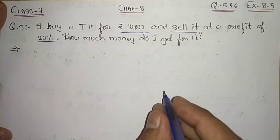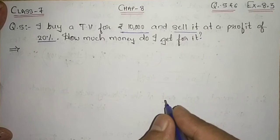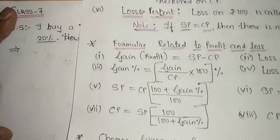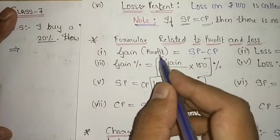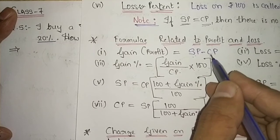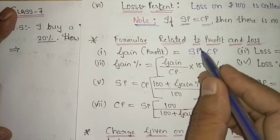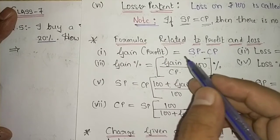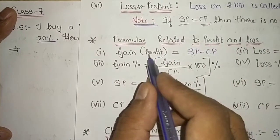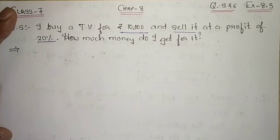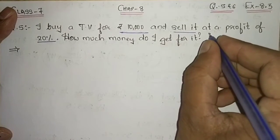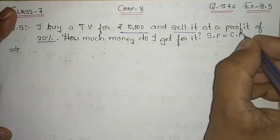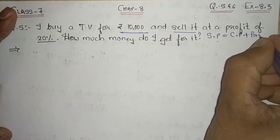We need to find at what selling price the TV was sold. From the introductory lecture, profit equals selling price minus cost price. If I want to find the selling price, I rearrange: SP equals cost price plus profit amount. To find SP, I need to know the cost price and the profit amount.